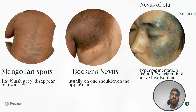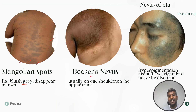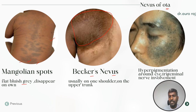The image here shows Mongolian spots — flat, bluish-gray spots classically seen in the sacral region and buttocks. They usually disappear on their own. The second image is Becker's nevus, typically seen on one shoulder or the upper trunk, and it is non-cancerous. Nevus of Ota is hyperpigmentation around the eye region with trigeminal nerve involvement.